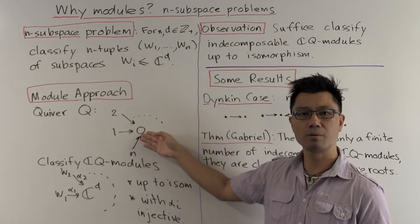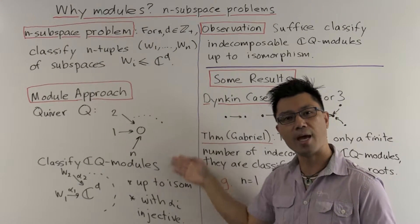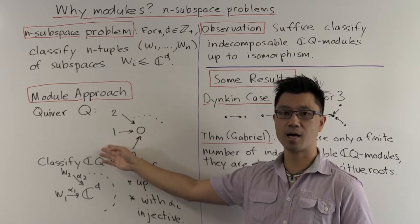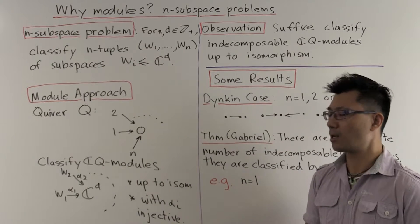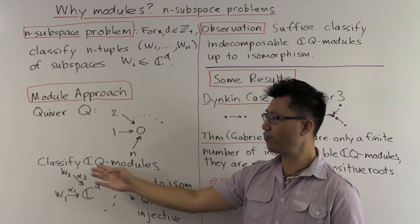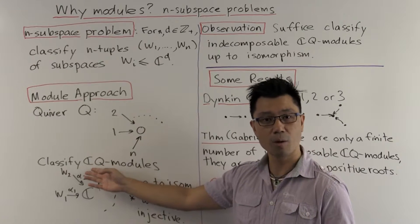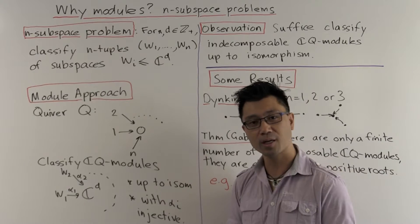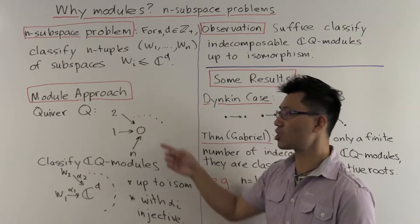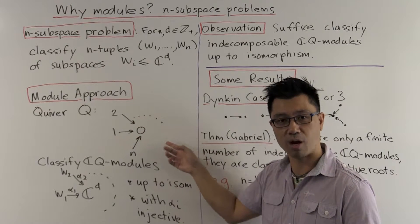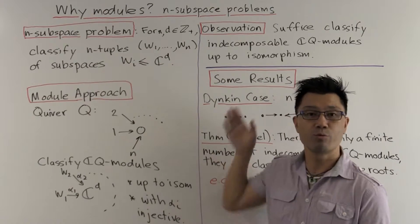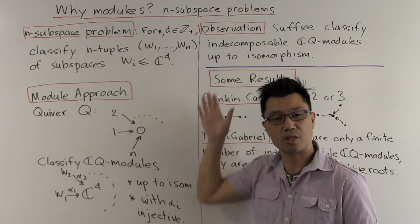The quiver will have n plus 1 vertices. We list it 0 in the middle, and vertices 1, 2, all the way up to n around the outside. And there's going to be n directed edges going from the outside in. So you can form this ring or algebra over the complexes CQ. This ring here has basis over the complex numbers just the paths that are inside this directed graph or quiver.